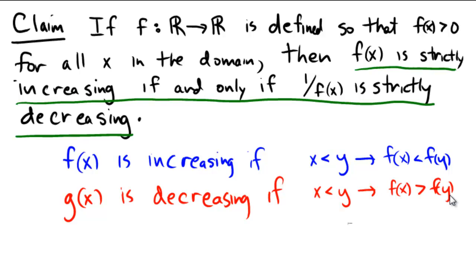Now, technically, because I used a strict greater-than and strict less-than instead of greater-than-or-equal-to and less-than-or-equal-to, I'm defining strictly increasing and strictly decreasing, because that's what I'm going to use in this video. Oftentimes, if we have increasing or decreasing without the strict qualifier, we allow the condition that they might be constant.